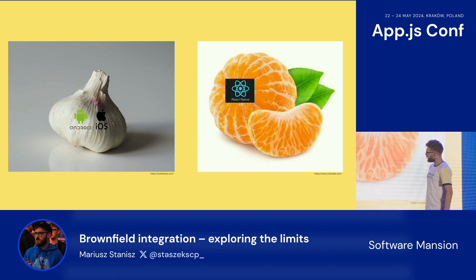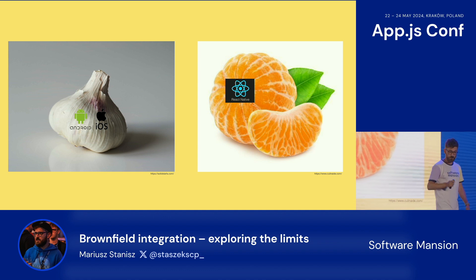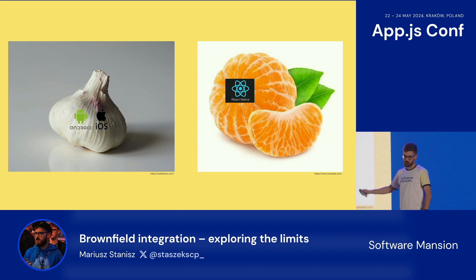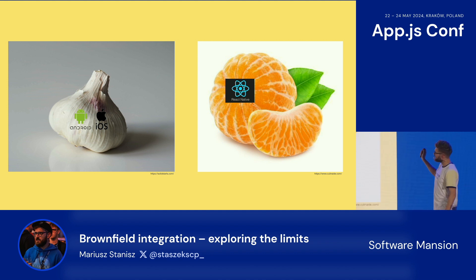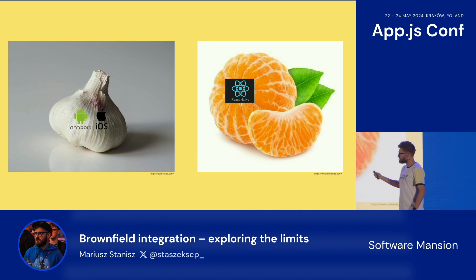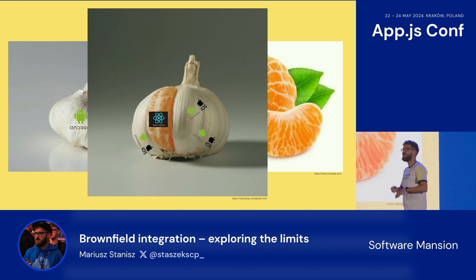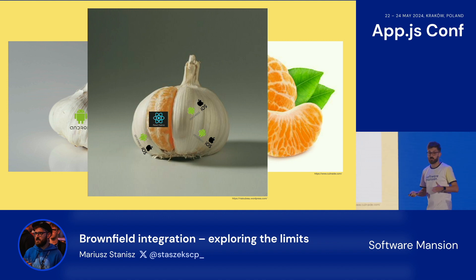Let's start with brownfield. I suppose you didn't expect a garlic there, but let's start with the garlic. Let's imagine it's a native app — not Android or iOS, doesn't matter. And the tangerine is React Native. So brownfield is basically this: you inject a React Native app into an existing native application.